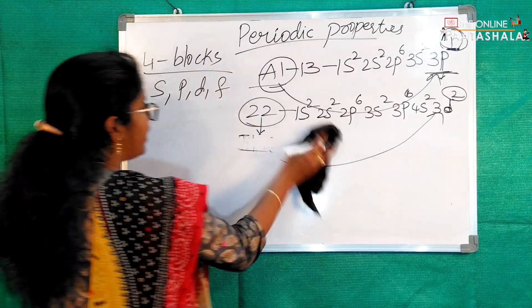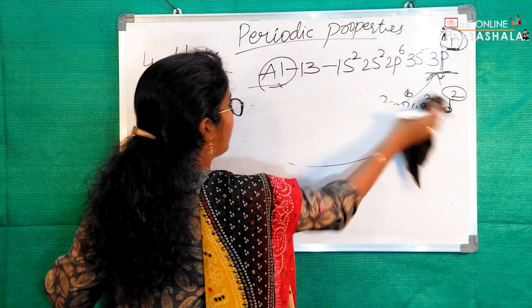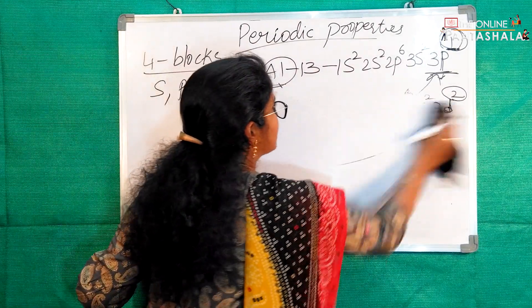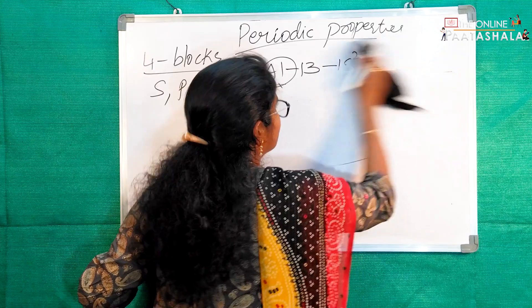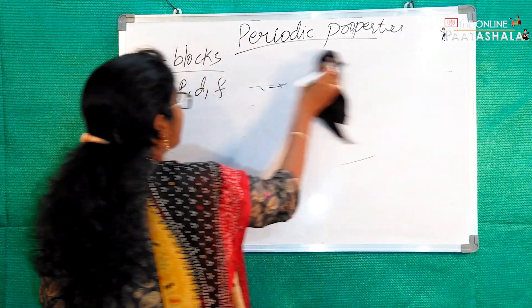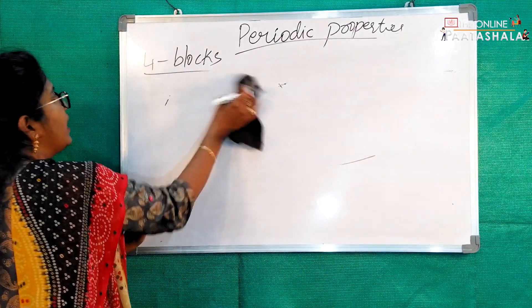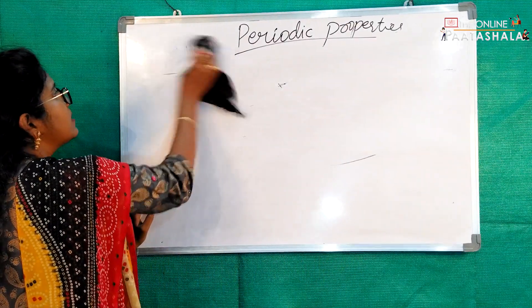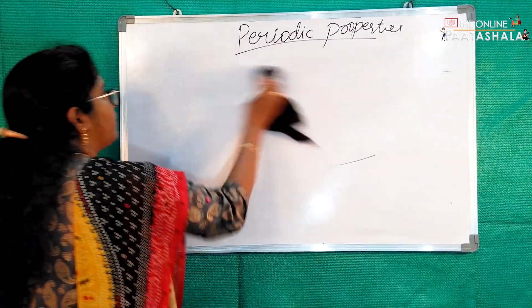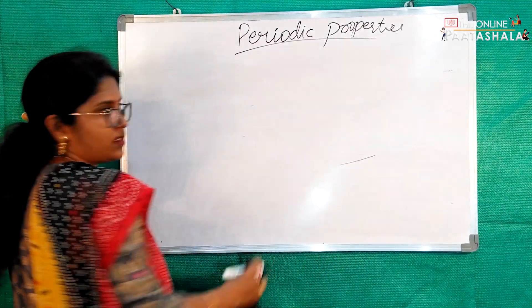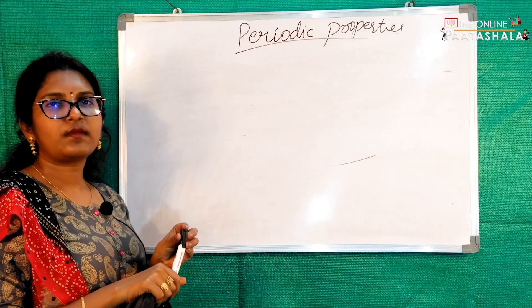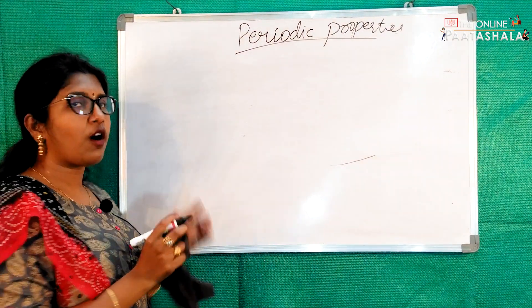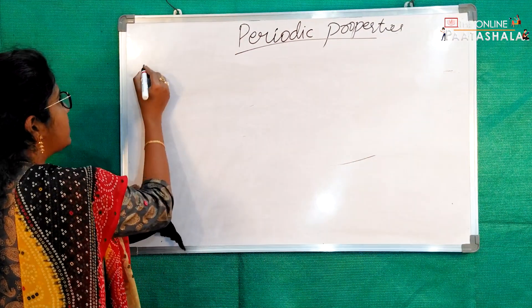Now we will go briefly through what is involved in the S block, P block, D block, and F block. As we have known, there are four blocks involved.